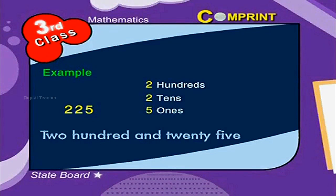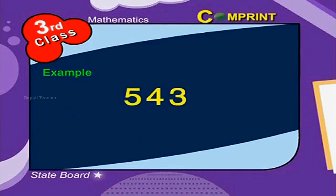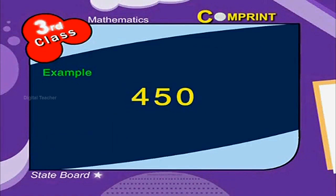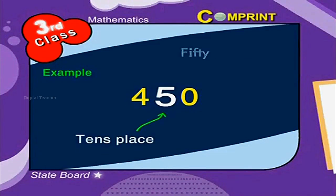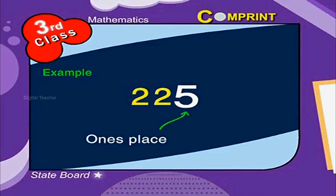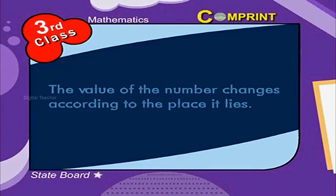Now let us learn in detail. In the number 543, 5 lies in the hundreds place. Thus, the value of 5 is 500. In the number 445, 5 lies in the tens place. Thus, the value of 5 is 50. In the number 225, 5 lies in the ones place. Thus, the value of 5 is 5. The value of a digit changes according to the place it occupies.